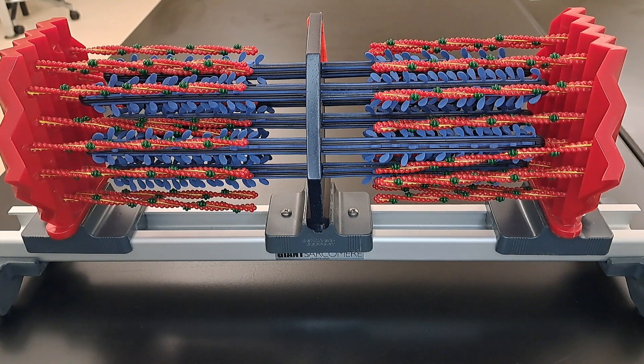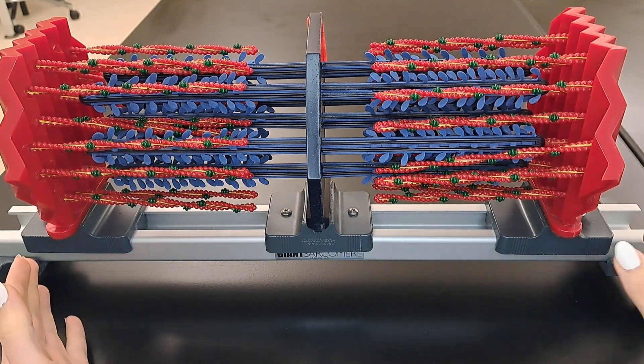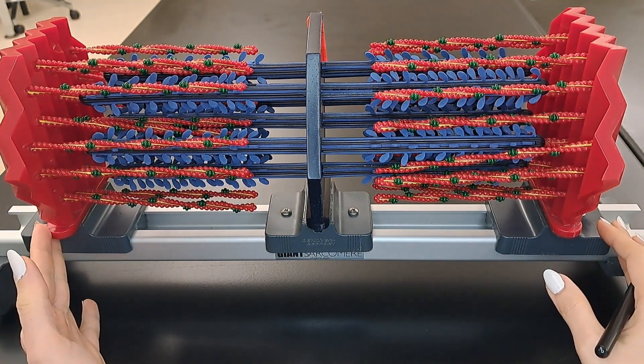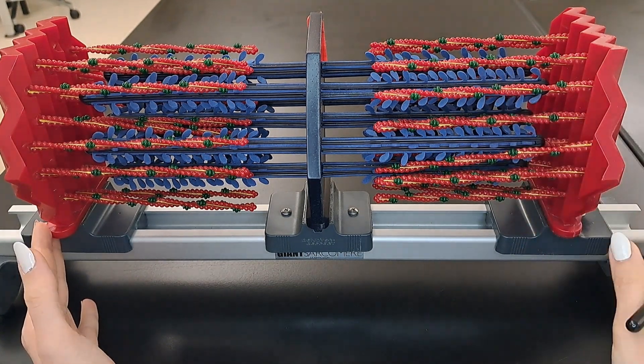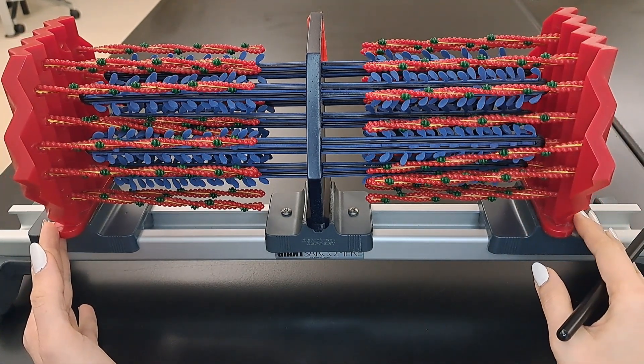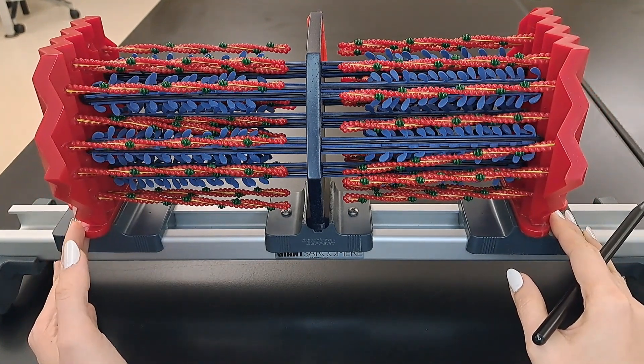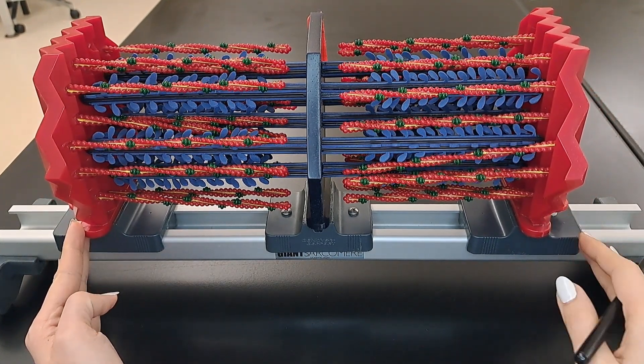When the skeletal muscle contracts, the sarcomeres will contract. As a result, the thin and the thick filaments will slide past each other, and as a result, the sarcomere will shorten in size.